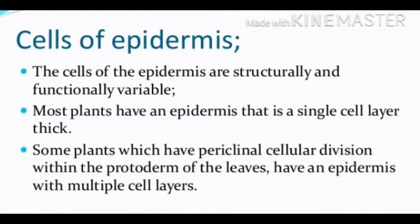The cells of the epidermis are structurally and functionally variable. Most plants have an epidermis that is a single cell layer thick. Some plants which have periclinal cellular division within the protoderm of the leaves have an epidermis with multiple cell layers. As the plant grows older, the outer protective tissues undergo certain changes. A strip of secondary meristem replaces the epidermis of the stem — cells on the outside are cut off from this layer. This forms the several-layer-thick cork and the bark of the tree. Cells of the cork are dead and compactly arranged without intercellular spaces. They also have a chemical called suberin in their walls that makes them impervious to gases and water.